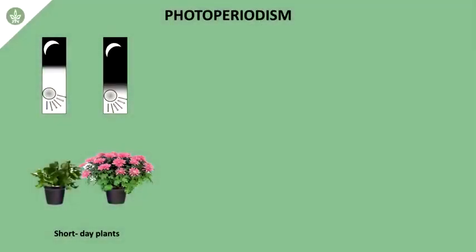Photoperiodism is the plant's response to a changing day length. There are plants which will only flower when the length of day gets shorter. We call these short-day plants, for example, chrysanthemums, soybeans, or the Maryland mammoth.